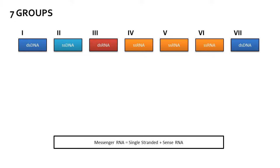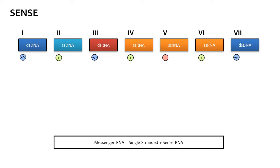All double-stranded genomes are by definition both positive and negative sense since they have two strands. All other genomes are only positive sense, with the exception of category 5, which is the only oddball where the sense of the strand is negative. It should be noted that group 2 viruses can package both a negative and a positive strand into their capsid, so technically they can be positive sense and negative sense at the same time.